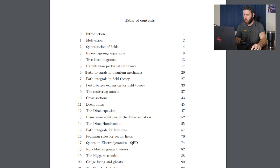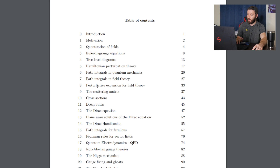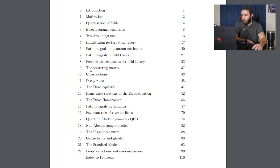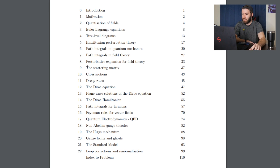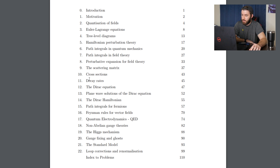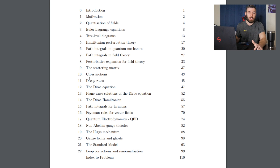Skipping over chapters six through eight because that's semester two, chapters nine through 14 are also first semester QFT. These cover the scattering matrix — the S-matrix, which I talked about briefly in the previous video — cross sections, decay rates, so really a lot of scattering. Then the Dirac equation and plane wave solutions of the Dirac equation and the Dirac Hamiltonian. So that should sum up a first semester course in quantum field theory.